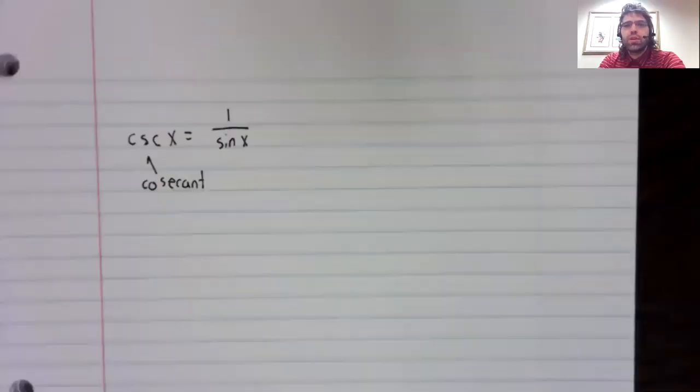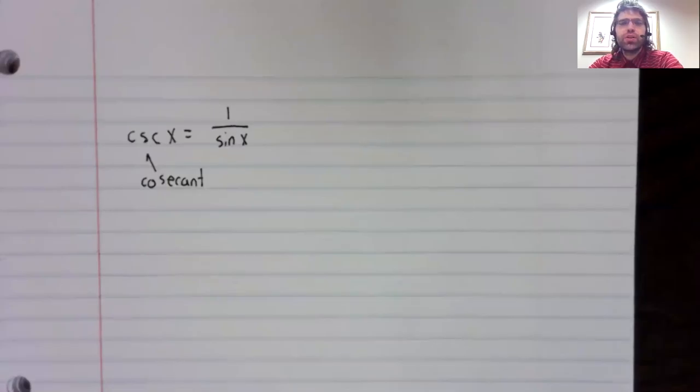The last two trig functions are the least important, and I'm going to kind of rush through them quickly. The cosecant is one divided by the sine.